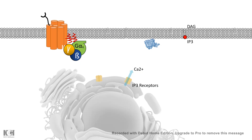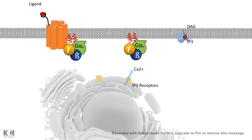Cyclic AMP, IP3, and DAG are all second messenger molecules. In GQ signaling, upon ligand binding the GQ gets activated, which activates phospholipase C. Phospholipase C breaks down phospholipids in the membrane, and one breakdown product is inositol triphosphate (IP3). IP3 can then migrate to the endoplasmic reticulum, where IP3 receptors bind to it and allow stored calcium inside the ER to be released into the cytosol.